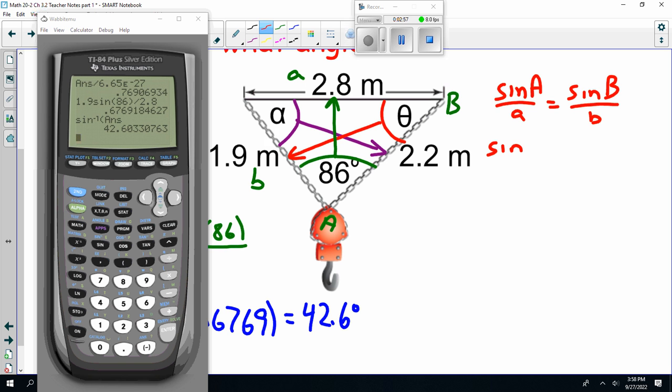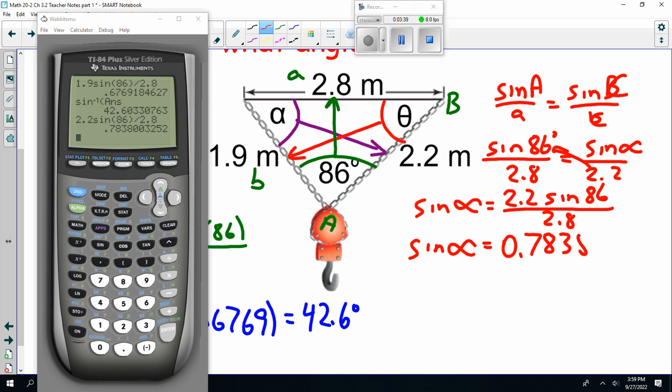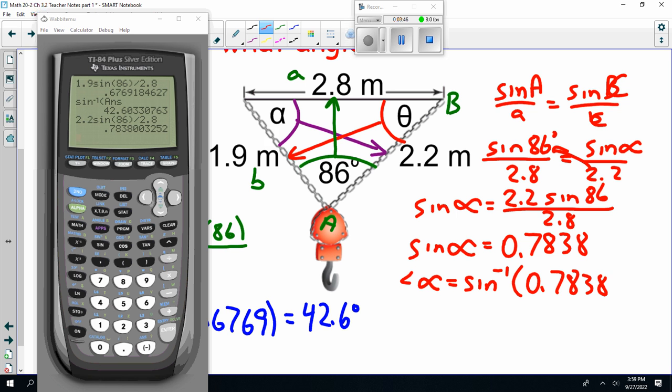So, this is sine of 86 degrees over 2.8. I should call this C and C. It is 2.2 over sine of alpha. So, cross-multiply. Sine of alpha is 2.2 times sine of 86 divided by 2.8. And, sine of alpha is 0.7838. Angle alpha is sine inverse of 0.7838. Inverse sine, inverse answer. 51.6.